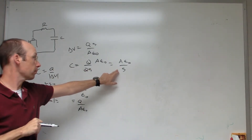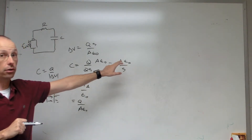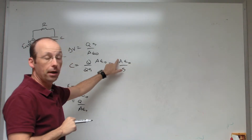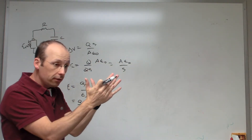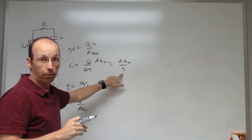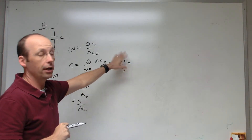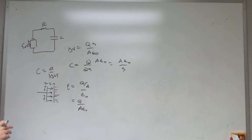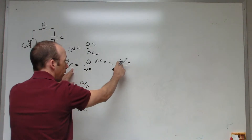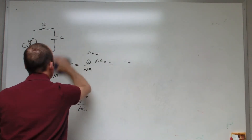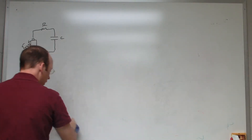So the capacitance is Q over ΔV, which gives Aε₀ over s — the Q's cancel. This is the capacitance of a parallel plate capacitor. Notice it does not depend on the charge; it only depends on the physical dimensions: the area and the separation. We could also put a dielectric in there to change the capacitance.